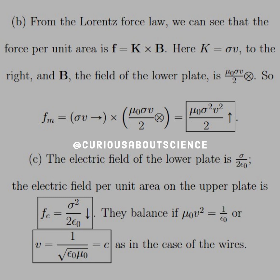crossed with mu naught sigma v over 2 into the page. And if you use the right-hand rule, that leads us with a resultant direction of up, but we see that we have mu naught sigma squared v squared over 2. Those squares will come to play in the next step.